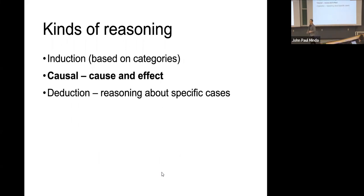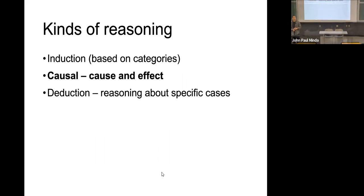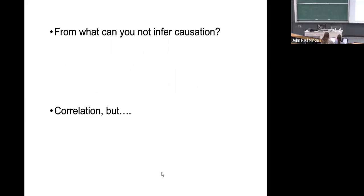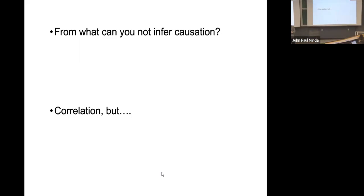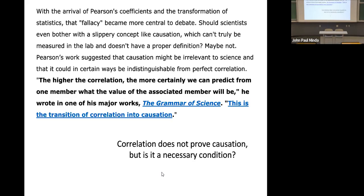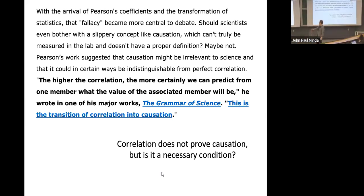Last week we mostly focused on induction or inductive reasoning. Today I want to talk about causal reasoning — reasoning about cause and effect — and then deductive reasoning, which is a formal kind of logic that requires a lot more system-two thinking, which is one of the reasons it's prone to heuristics, biases, fallacies, and errors. We all know that you can't inconclusively infer causation from correlations. But of course they're well linked — the higher the correlation, the more certainly we can predict one member from the other. This is the transition of correlation into causation.